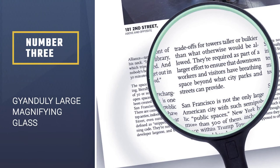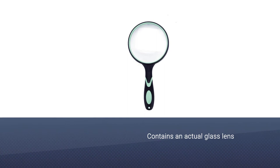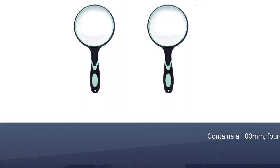Number 3. GYANDULY Large Magnifying Glass. This option contains an actual glass lens that provides users with a crystal clear view with no distortion. This GYANDULY Magnifying Glass contains a rubber-constructed frame that protects the glass from shattering in case it drops.